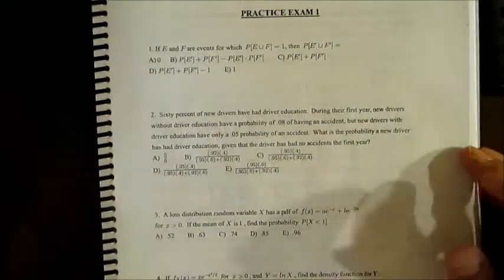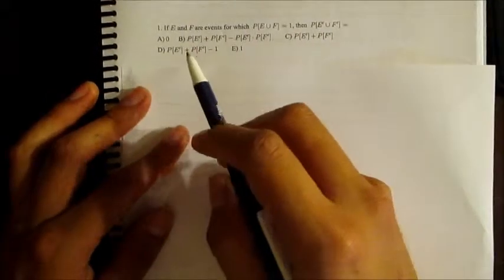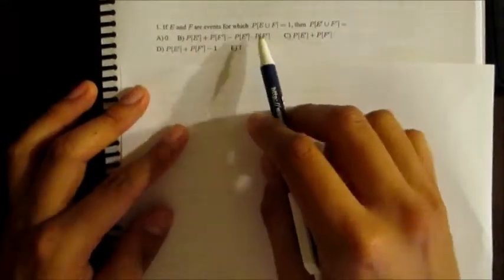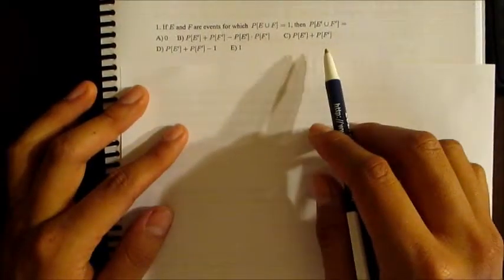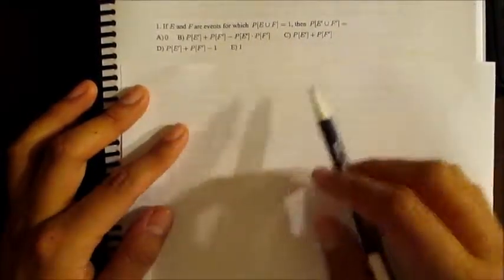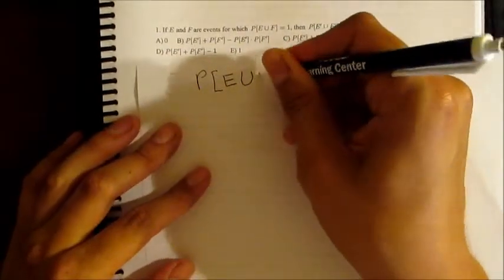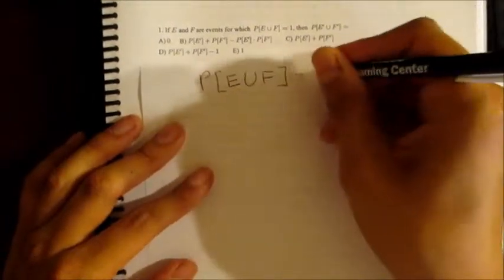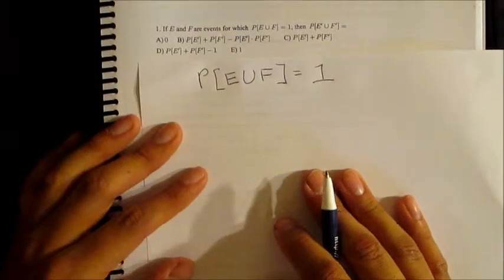The first one says the following: if E and F are events for which the probability of E or F is equal to one, then the probability of the complement of E or the complement of F equals, and we have our various options here. So the first thing that we have to show here is that the probability of E or F equals one.